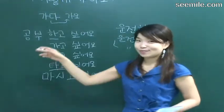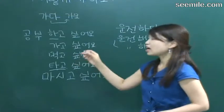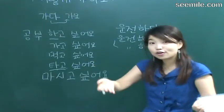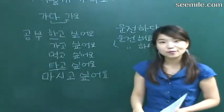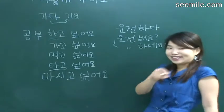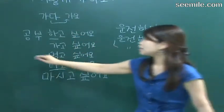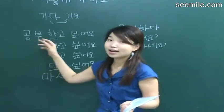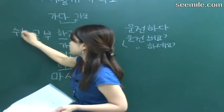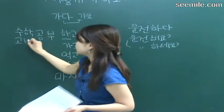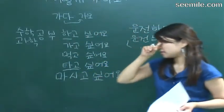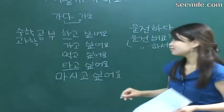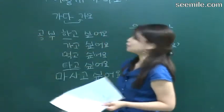한국어 공부하고 싶어요? That's asking. 네, 한국어 공부하고 싶어요. 영어 공부하고 싶어요? 필요 없어요 — I don't need it. 수학 is math. 수학 공부하고 싶어요 — I want to study math. 과학 — science. 수학 공부하고 싶어요? 과학 공부하고 싶어요? Used to, not anymore — I hate math right now.